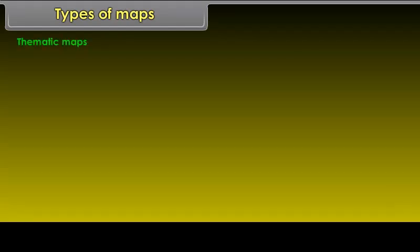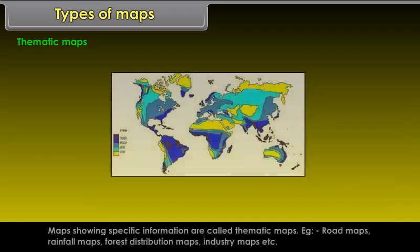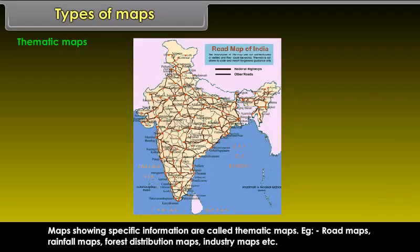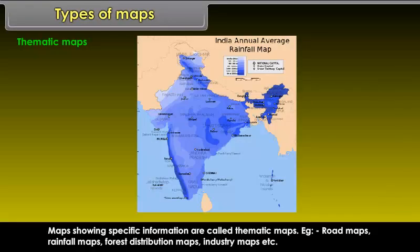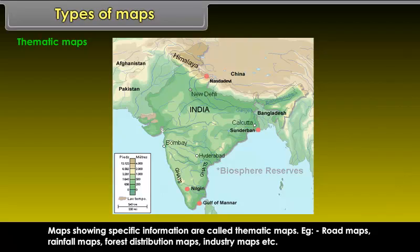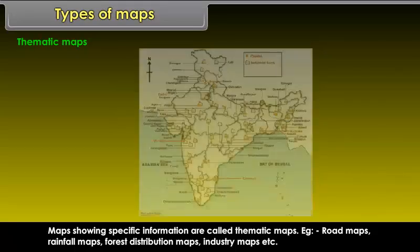Thematic Maps: Maps showing specific information are called thematic maps. Examples include Road Maps, Rainfall Maps, Forest Distribution Maps, and Industry Maps.